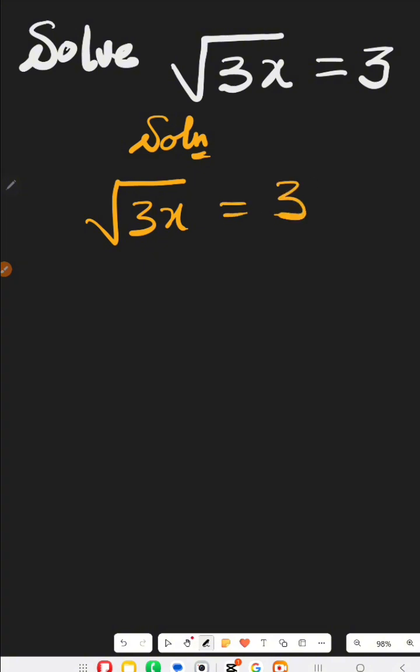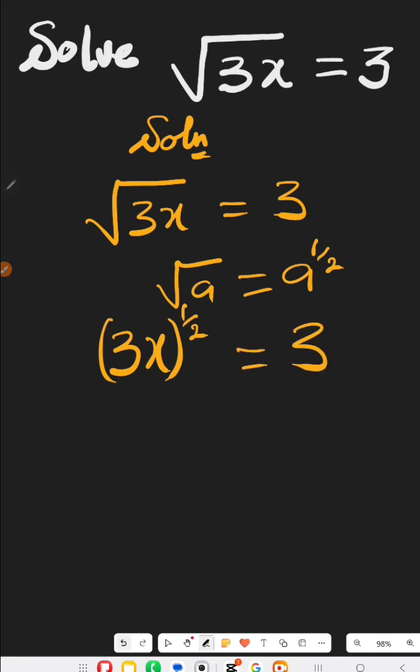In law of indices we have root of a is equals to a raised to the power of half. So the left hand side we change to 3x raised to the power of half equals to 3.